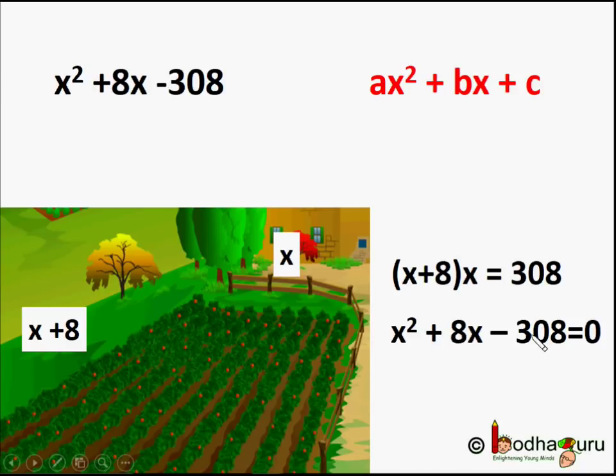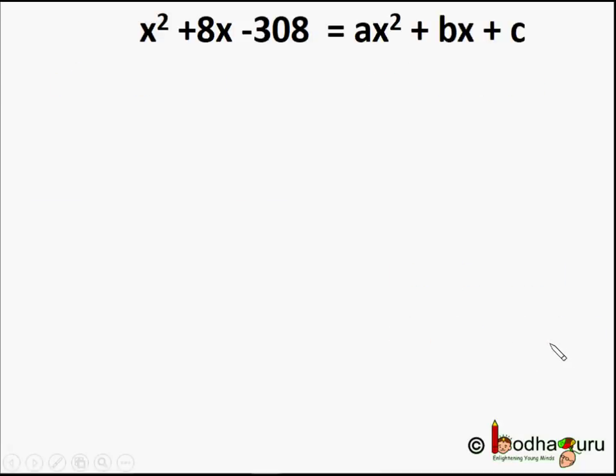So here a = 1, b = 8, and c = -308. Let's see if we get the same value of x using the formula we derived.